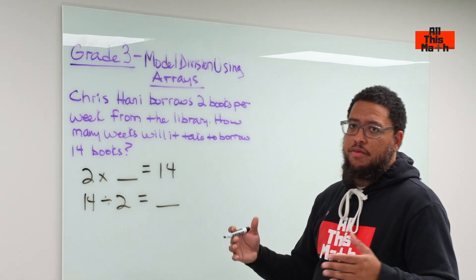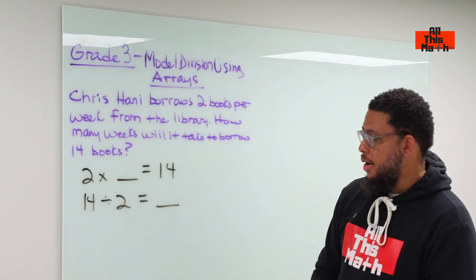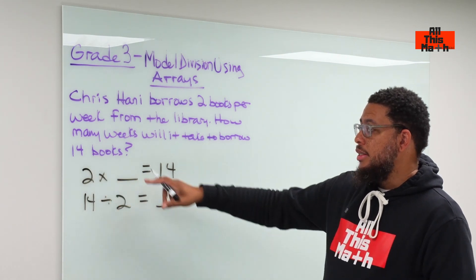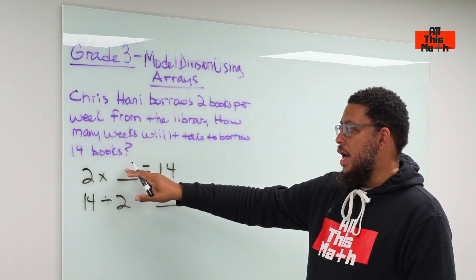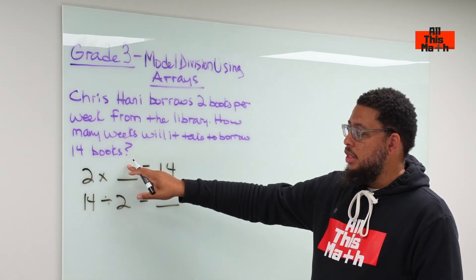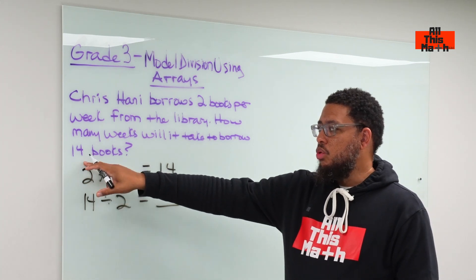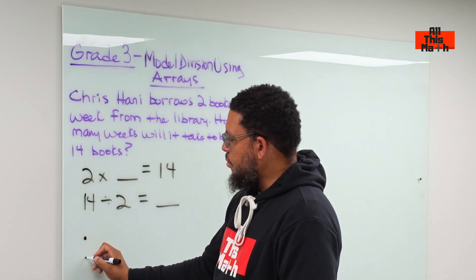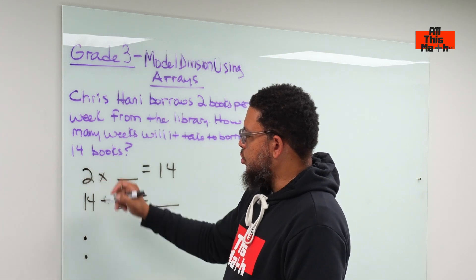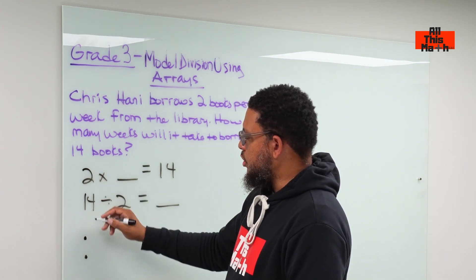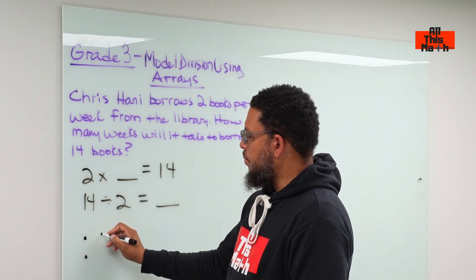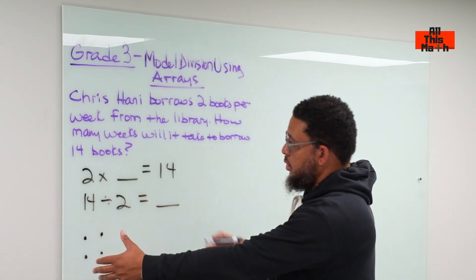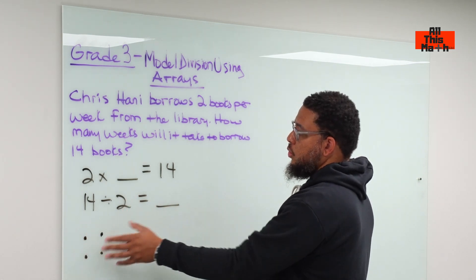In an array, we have rows and we have columns. Our first number in our multiplication problem is the number of rows, and the second number is the number of columns. The columns represent the weeks, and the rows represent the number of books. So we have two rows because we're getting two books every week — that's our first column for the first week, second week. We don't know how many weeks we'll need; that's what we're trying to find out.